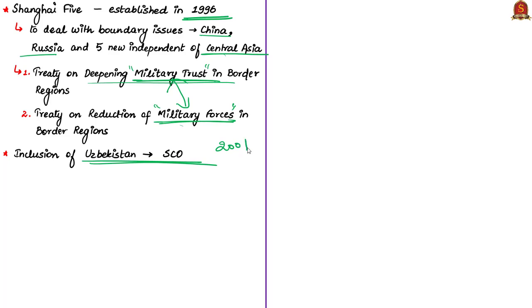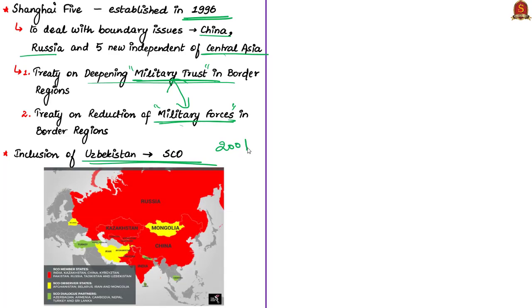In 2001, the Shanghai 5 evolved into the Shanghai Cooperation Organization with the inclusion of Uzbekistan. At present, the SCO consists of eight full members: India, China, Kazakhstan, Kyrgyzstan, Pakistan, Russia, Tajikistan and Uzbekistan. The organization has four observer states: Afghanistan, Iran, Belarus and Mongolia.